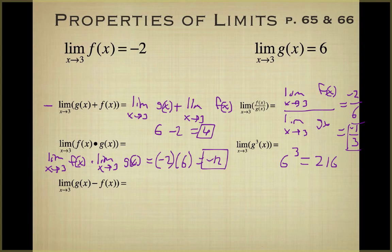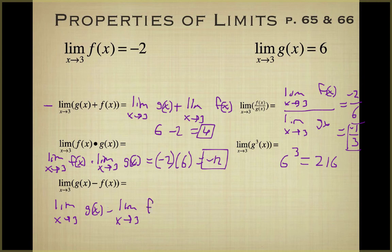Last, we have the limit as x approaches 3 of g(x) minus f(x). We break this up into the limit as x approaches 3 of g(x) minus the limit as x approaches 3 of f(x). This is 6 minus negative 2, which equals 8.